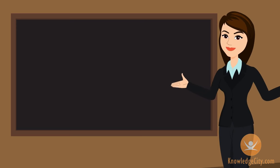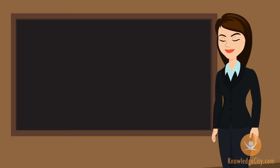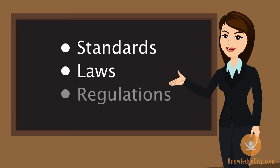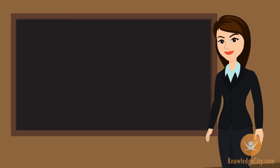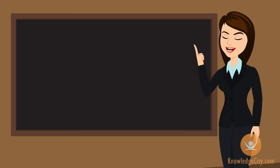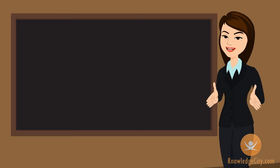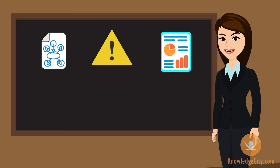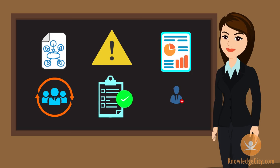Why is corporate governance important? The implementation and maintenance of strong corporate governance policies ensure that proper oversight is in place to hold the organization accountable to the standards, laws, and regulations that it should be abiding by. Effective corporate governance helps an organization to achieve its objectives and desired outcomes through sound strategic and business planning, risk management, financial management and reporting, human resource planning and control, and compliance and accountability systems.